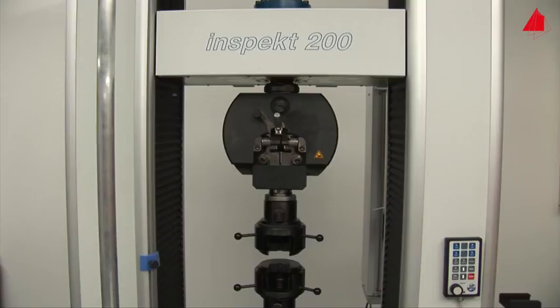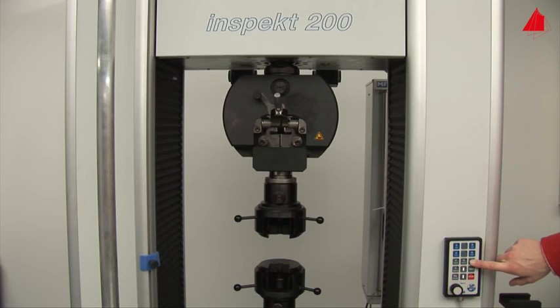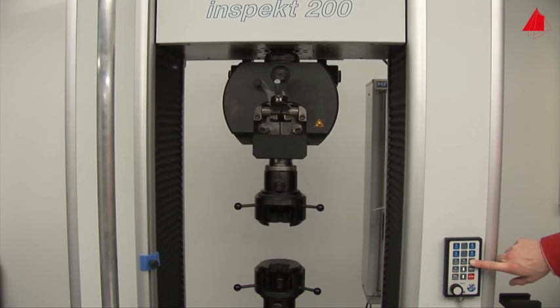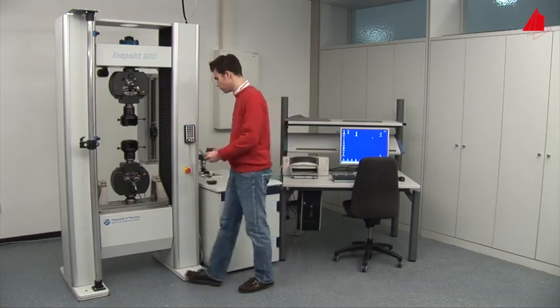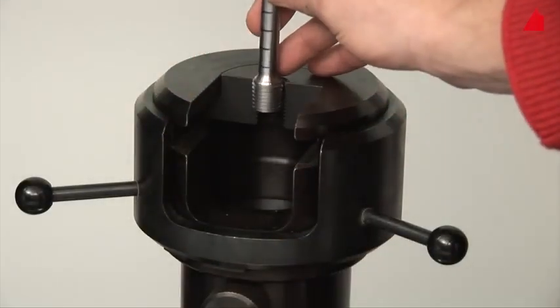Using a hand control, the tester moves the upper crosshead into its correct starting position. Now we can place the threaded ends of the test piece in the lower and upper grips of the testing machine.